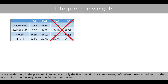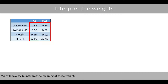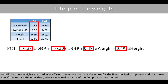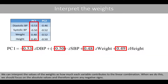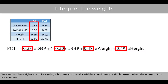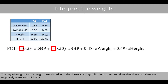Since we decided in the previous video to retain only the first two principal components, let's delete the other two columns so that we can focus on the weights for the first two components. Recall that these weights are used as coefficients when we calculate the scores for the first principal component, and these specific values are the ones that generate maximal variance. We can interpret the values of the weights as how much each variable contributes to the linear combination — we should focus on the absolute values and ignore any negative signs. We see that the weights are quite similar, meaning all variables contribute to a similar extent when the scores of PC1 are computed. The negative signs for the weights associated with the diastolic and systolic blood pressure tell us that these variables are negatively correlated with PC1.